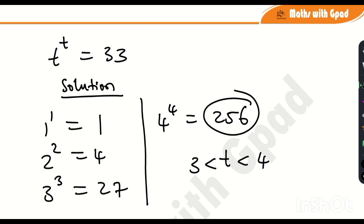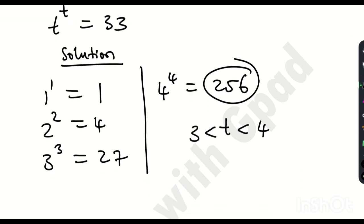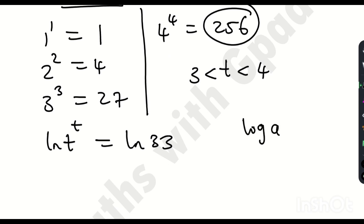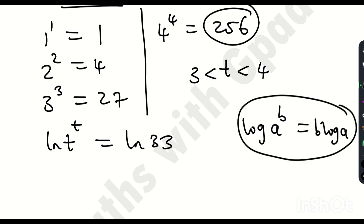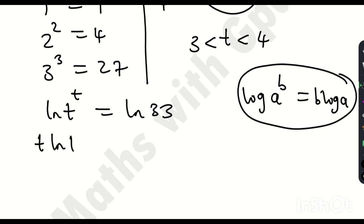What I'll do first is take the natural logarithm of both sides, because we have an exponent of t. So it's going to be ln(t^t) = ln(33). From the laws of logarithms, if you have log(a^b), the exponent b comes down as a coefficient, giving b·log(a). Applying this here, t·ln(t) = ln(33).